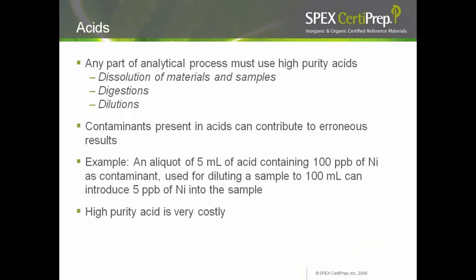Acid plays a major role in sample analysis — for dissolution of materials, digestions, and dilutions. Contaminants present in acids can contribute to erroneous results, so any part of the analytical process must use high-purity acid. For example, if you use 5 ml of an acid with 100 ppb nickel diluted to 100 ml volume, it can introduce 5 ppb of nickel into the sample. Hence, you need a very high-pure acid, but very high-pure acids are ten times more expensive than technical grade acids.